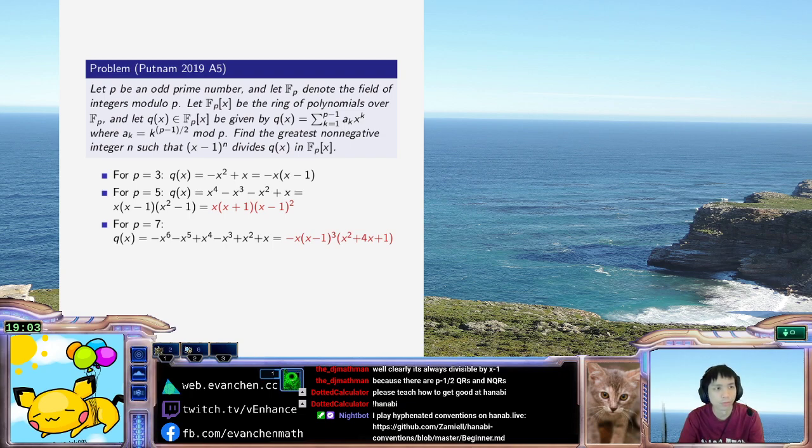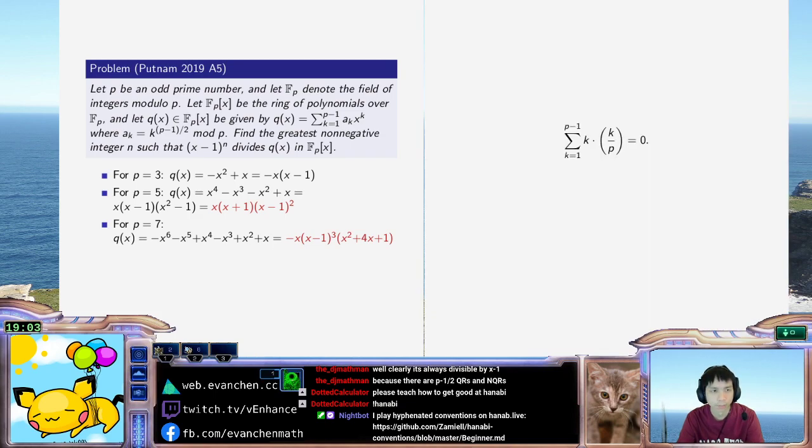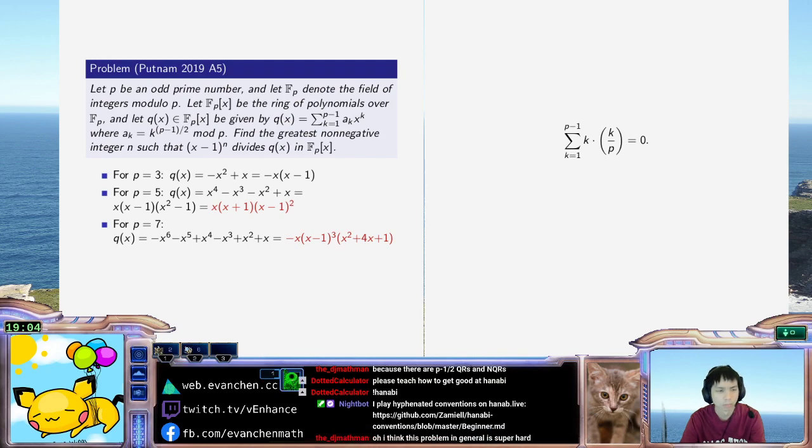The statement, if the answer is at least 2 for large enough primes, then the statement is that sum of k times the Legendre symbol k on p is equal to 0 if I sum from k equals 1 through p-1. And this is, in fact, true for dumb reasons if k is... or if p is 3 mod 4. Because if p is 3 mod 4, then... Hang on. What? Really?